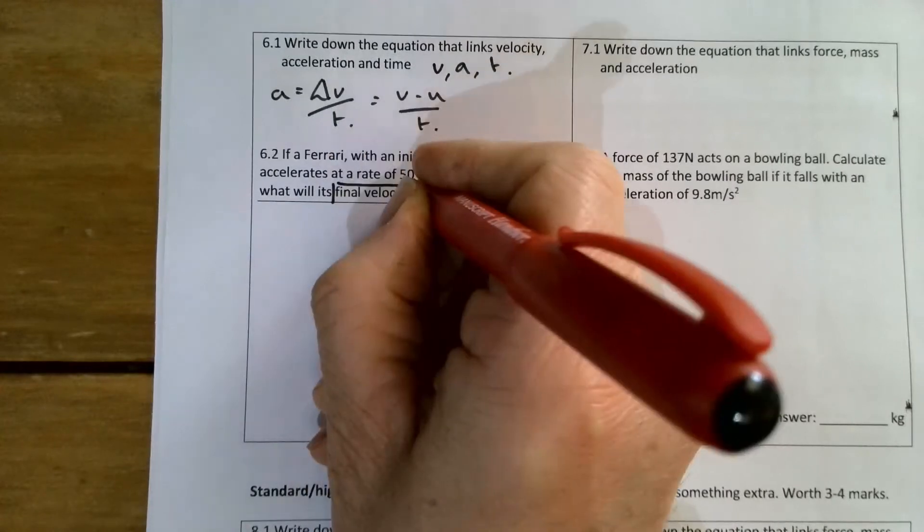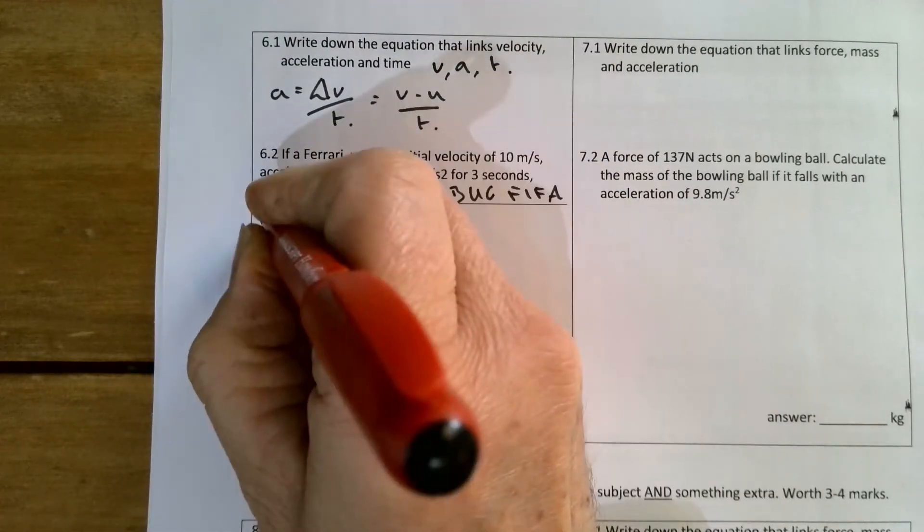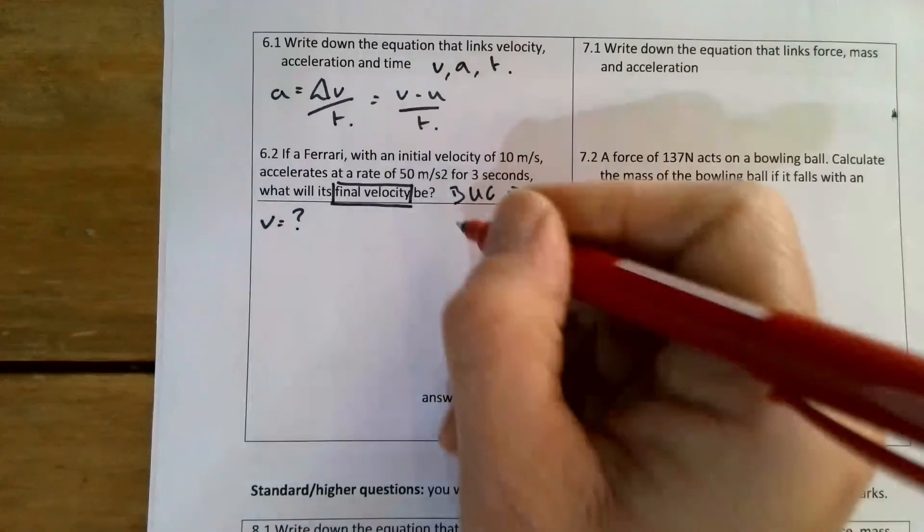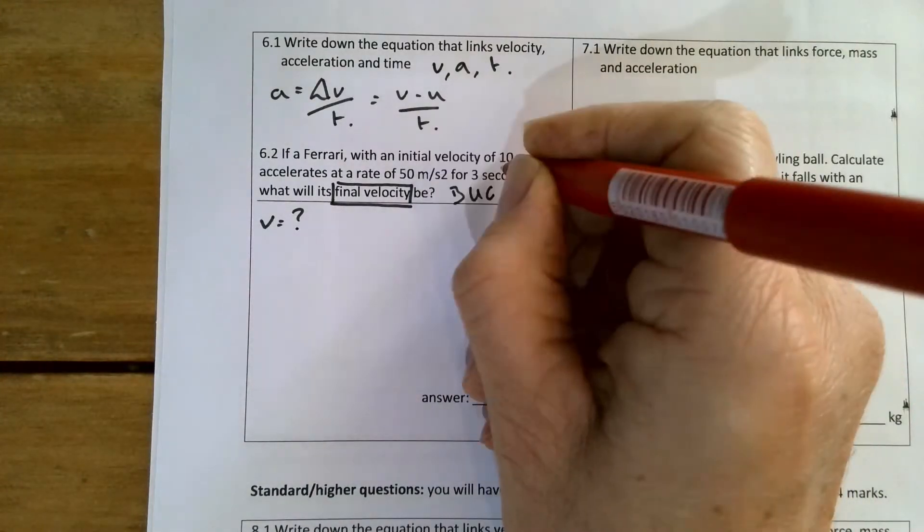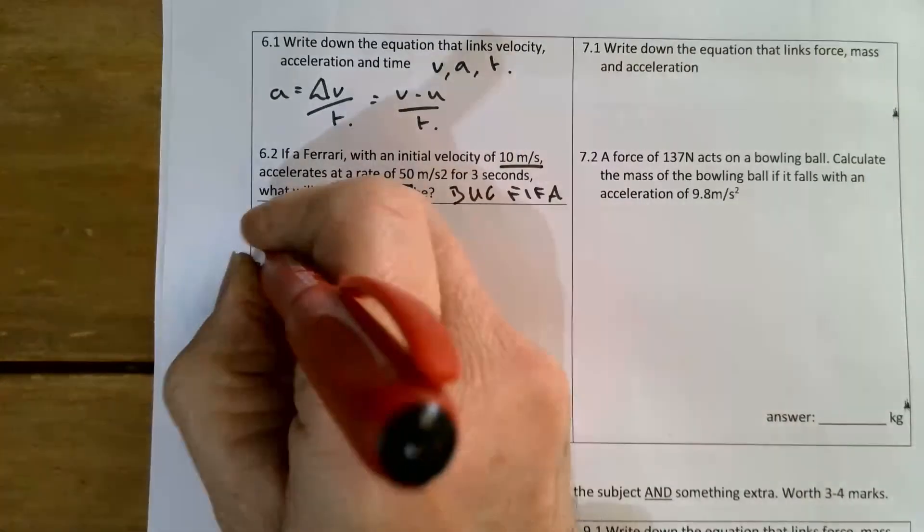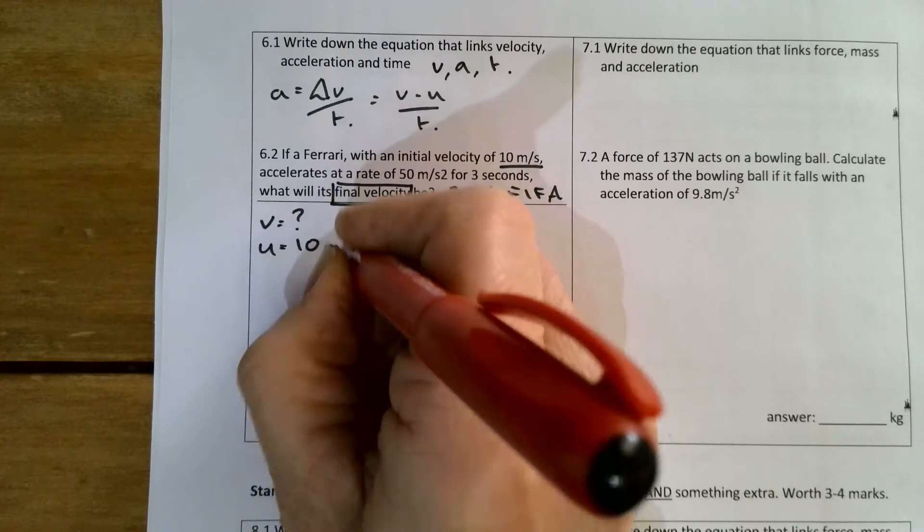I'll box in what I need to find, v. I need to underline my data. It's got initial velocity of 10 meters per second, so u equals 10 meters per second.